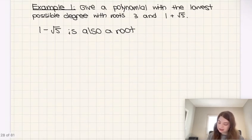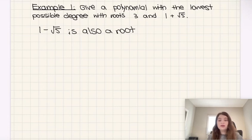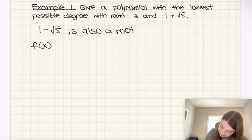So our first step is to state that we must also have 1 minus root 5 as a root, as well as the roots 3 and 1 plus root 5 that we had originally from the question. Next we're going to multiply all three of these roots together. So our function is going to look like this.